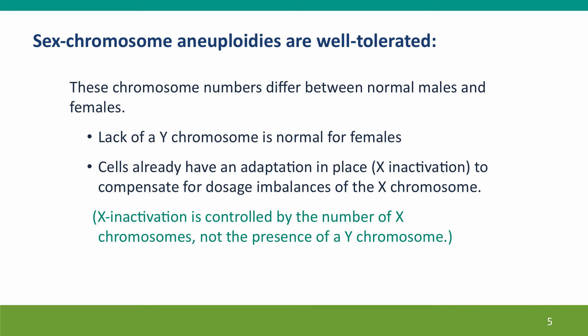I strongly recommend that you read these to get real insight into the differences and similarities of these people and the rest of us. Sex chromosomal aneuploidies are well tolerated — they don't have severe defects — probably because the chromosomes differ normally. Lack of a Y chromosome is the normal state for females, and cells already know how to deal with imbalances in the X chromosome through X inactivation. Importantly, X inactivation is controlled by the number of X chromosomes present, not by the presence of a Y chromosome.